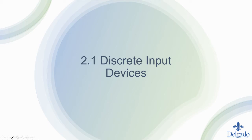In this module we're going to start looking at the field devices themselves — what gets connected to the PLC. It's important to step back and understand what devices are in the plant, on the plant floor, or in the process — what signals will be coming back to the PLC. It's important to understand a working concept of what they are and how they operate.